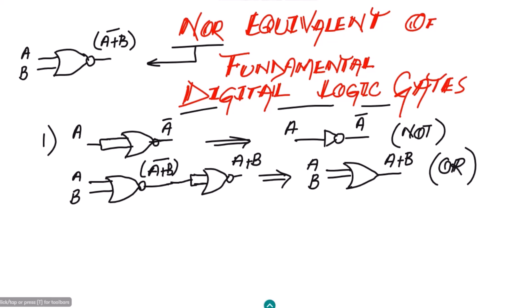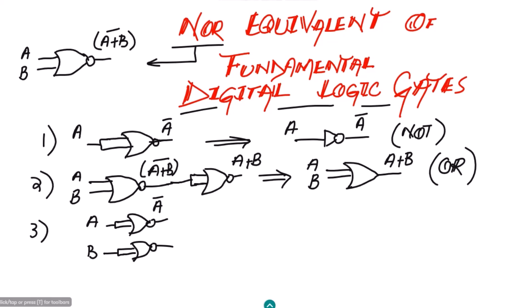In the third part, I will use two NOR gates. At the first gate, both inputs are shorted and input A is applied; at the second gate, input B is applied similarly. At the output of the first gate I get A complement, and at the output of the second gate I get B complement. These two outputs are then applied to a third NOR gate.